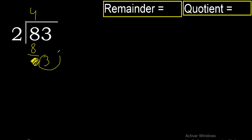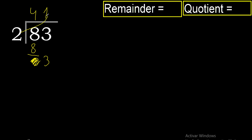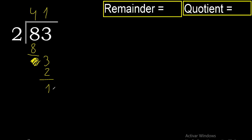Now with 3. 2 multiplied by 2 is 4 — excessive. 2 multiplied by 1 is 2. 3 minus 2 is 1, there is no number that goes down, therefore there is a remainder of 1.